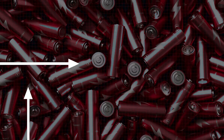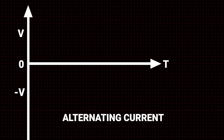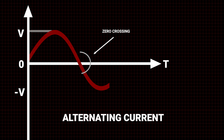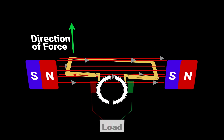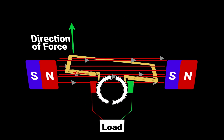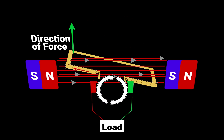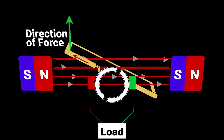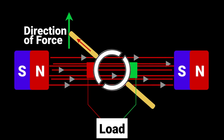With AC, or alternating current, the flow of current changes direction, causing the voltage to also reverse and flow with it. The science behind AC generation includes magnetic fields and can be complex, so we won't be getting into that today.